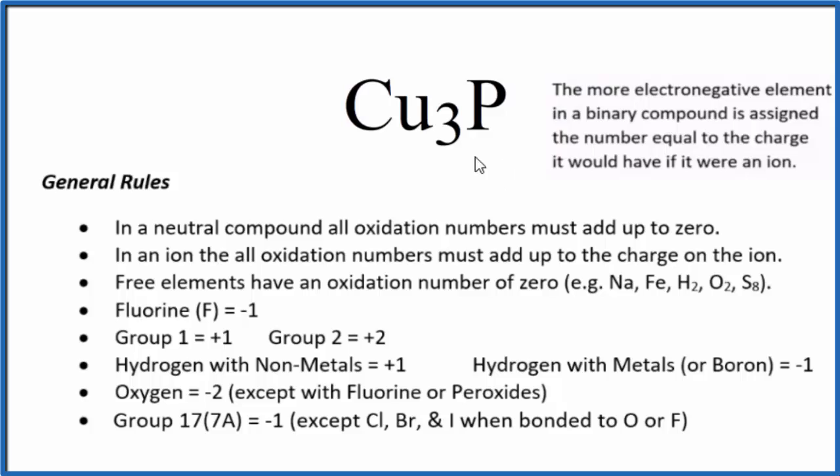phosphorus is more electronegative, in this compound, it's going to be equal to the charge on that element if it was an ion. So phosphorus forms ions with a 3-ionic charge. So the oxidation number we're going to say is minus 3.